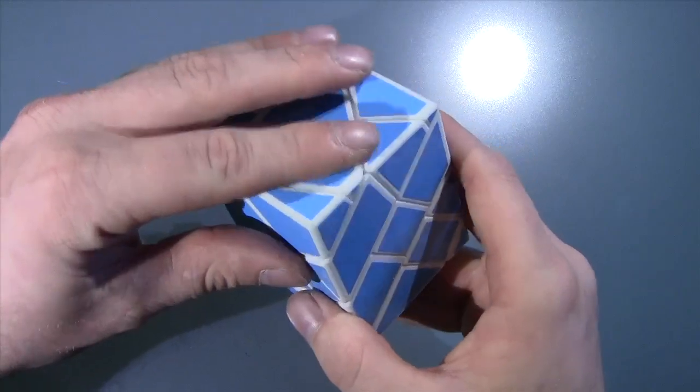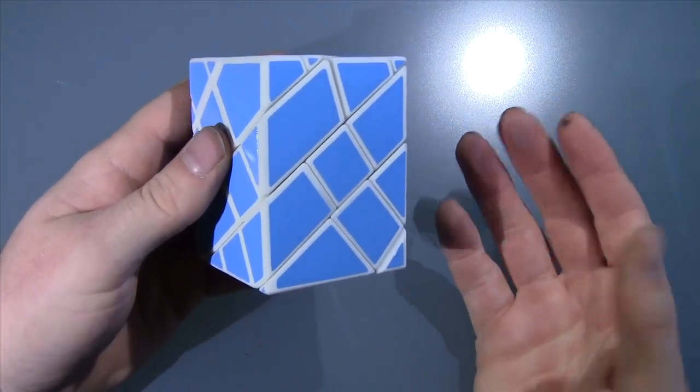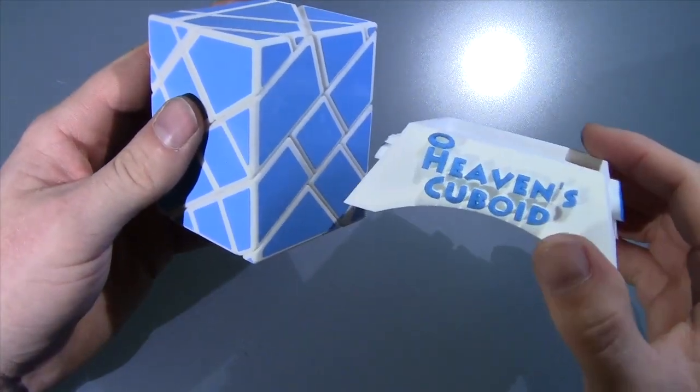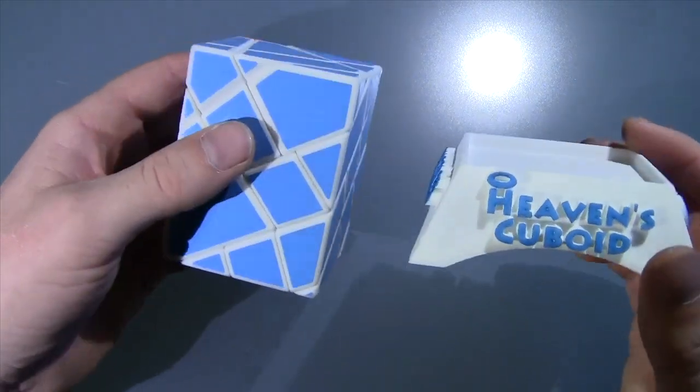Now these are available on my Shapeways shop. You can either buy the puzzle by itself if you are interested in purchasing one of these, or you can buy the puzzle and the Heavens Cuboid. The prices are at my Shapeways shop. The links for both of these are in the description.